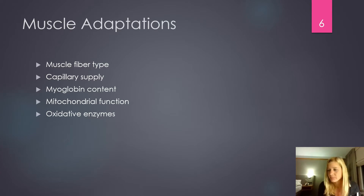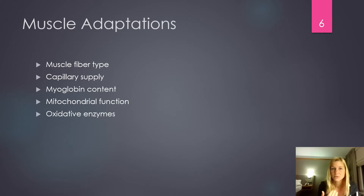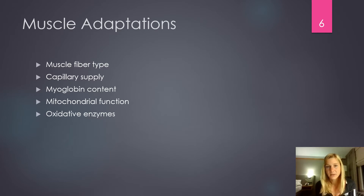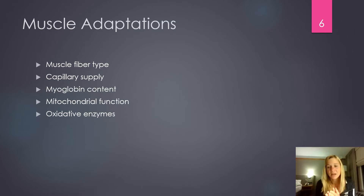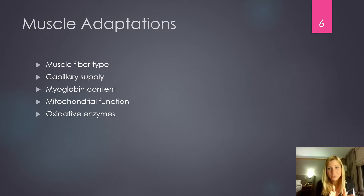With aerobic training we'll see selective recruitment and selective hypertrophy. We're able to more effectively select those slow twitch fibers to activate and utilize them, and we'll also experience hypertrophy of those selected fibers. If you have a combination of type 1 and type 2 fibers, we can select the type 1 fibers, increase their size, and have no effect on the type 2 fibers. Our fast twitch fibers will be unaffected with aerobic training.